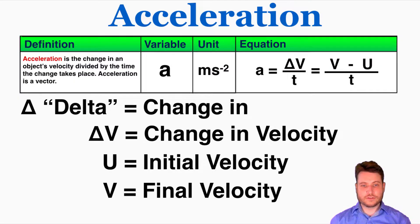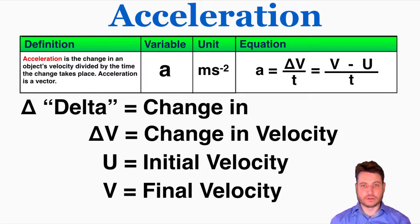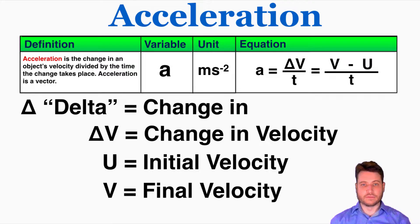I'm also introducing two new variables before we start talking about acceleration. U is going to stand for the initial velocity, or the starting velocity of an object, and V is going to stand for the final velocity of an object at the end of a problem.